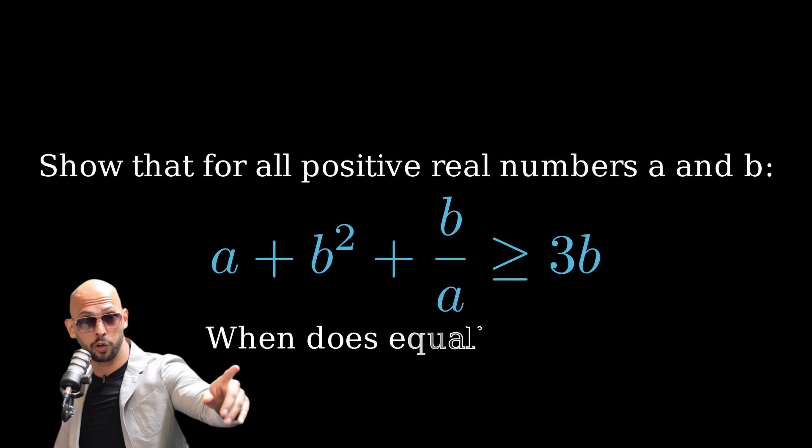Here's the problem. Prove that for any positive real numbers A and B, the inequality a plus B squared plus B over A is greater than or equal to three times B.